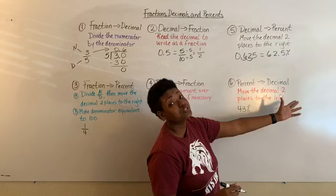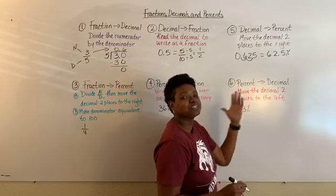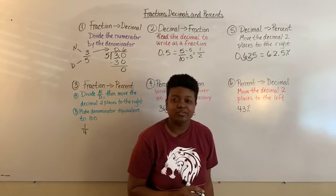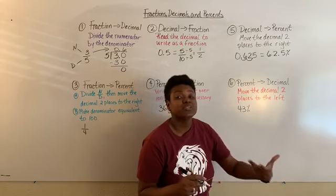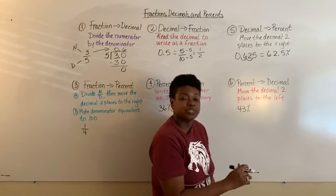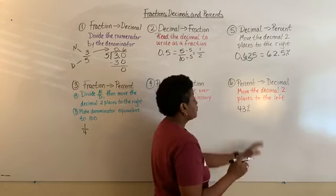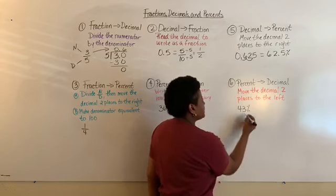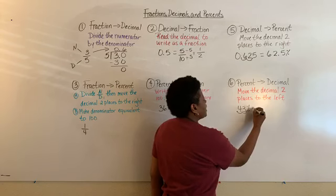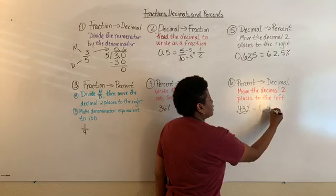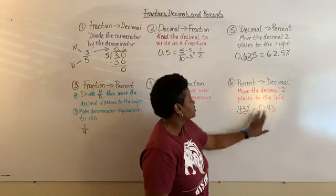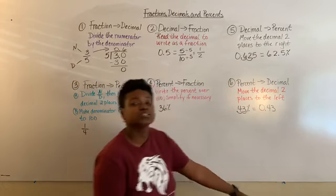To convert a percent back to a decimal, you move the decimal two places to the left. Percent means out of 100, so you have to adjust the decimal. For 43 percent, the decimal is behind the three, so you move it two places to the left. 43 percent equals 0.43, or 43 hundredths.